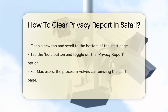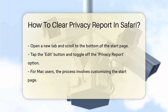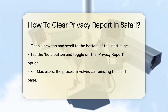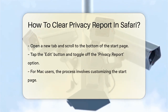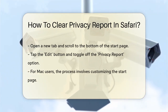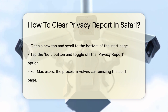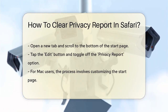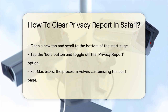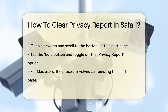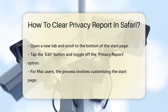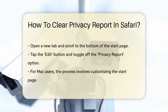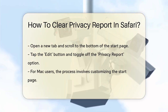If you're using an iPhone or iPad, you can hide the privacy report from the start page. To do this, open Safari, tap on the Tabs button at the bottom right corner, then tap the plus button at the bottom left to open a new tab. Scroll down to the bottom of the start page and tap on the Edit button. Here you'll find a toggle next to Privacy Report — simply turn this toggle off.